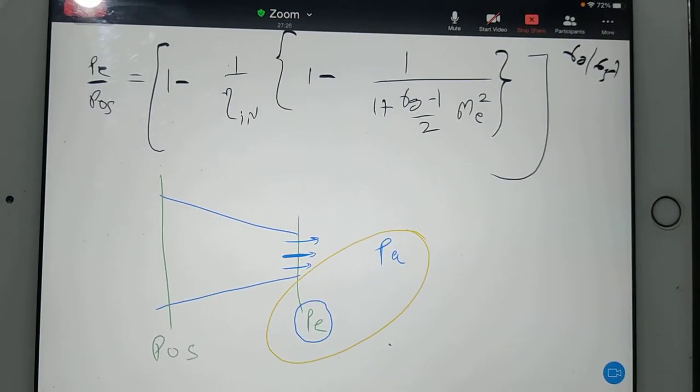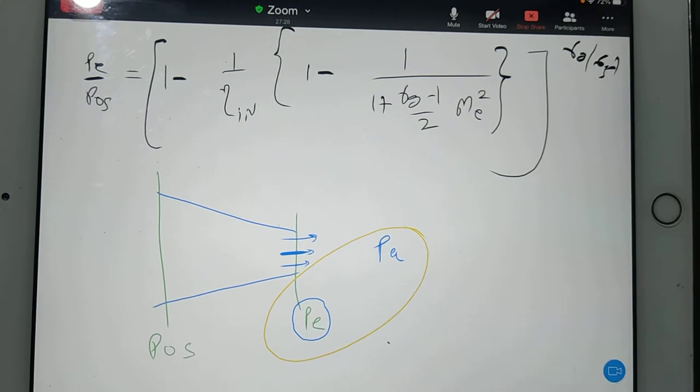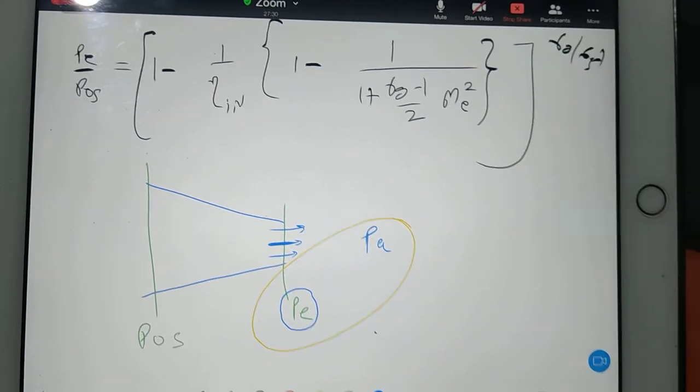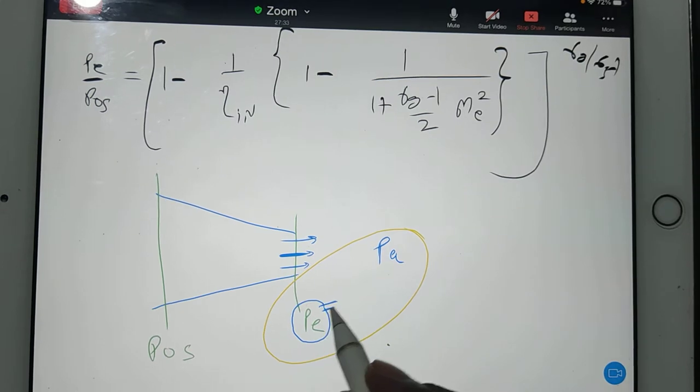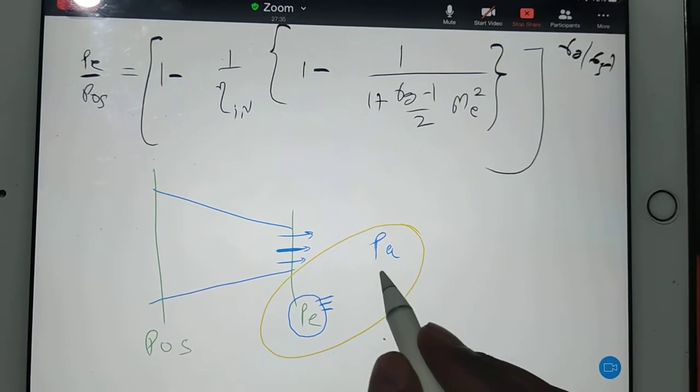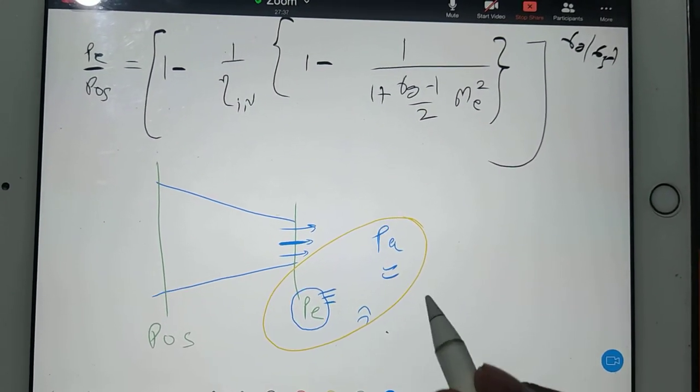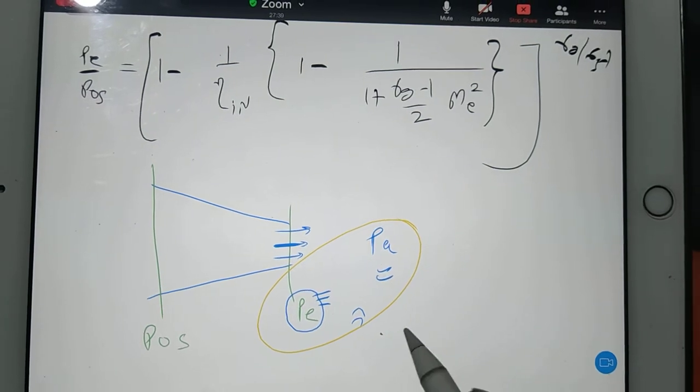We have discussed all these situations: over-expansion, under-expansion, and so on. So for that purpose, how will you know that this pe value is more than pa or less than pa? Over-expansion, under-expansion, optimal expansion, choked, unchoked - these things.